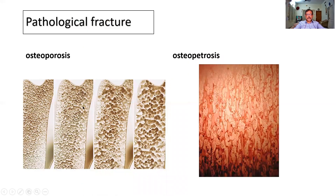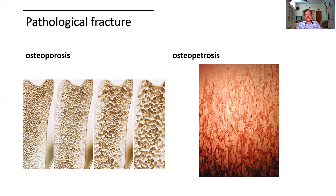Pathological fracture — there are a lot of conditions. Look at this bone — you can appreciate the difference. This one is more porous, with lots of holes in it: osteoporosis, a sign of old age or a metabolic disorder. Osteopetrosis, otherwise called marble bone disease — it will appear very hard, but then it is like chalk, brittle, and it breaks.